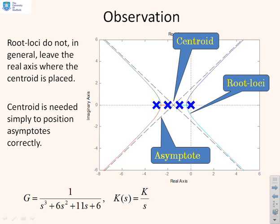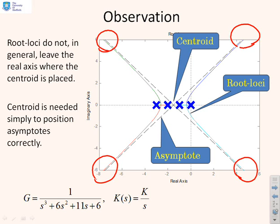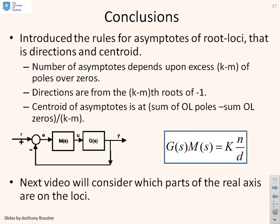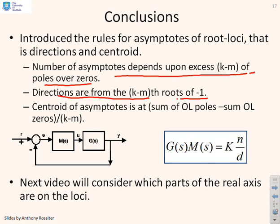An important observation: the asymptotes are where the poles go eventually, but the closed-loop poles do not lie on the asymptotes — they approach the asymptotes. The centroid tells us where to sketch the asymptotes and where to start them from, but there is no rule that says the centroid itself is on the loci. It simply tells you how to position the asymptotes to help with your sketch. Conclusions: we've introduced the rules for asymptotes of root loci — the directions and the centroid. The number of asymptotes depends on the excess k minus m of poles over zeros. The directions come from the (k-m)th roots of minus 1, and the centroid comes from the sum of the open-loop poles minus the sum of the open-loop zeros, divided by k minus m.